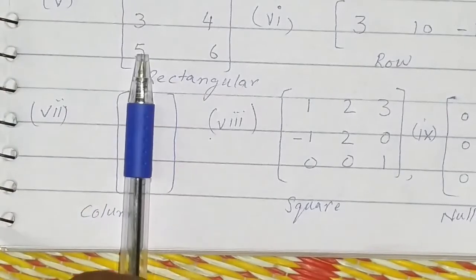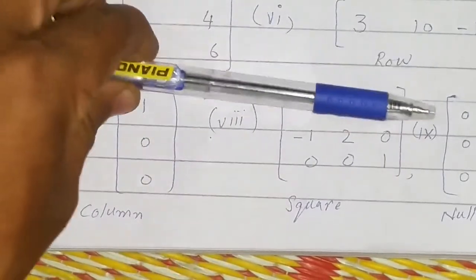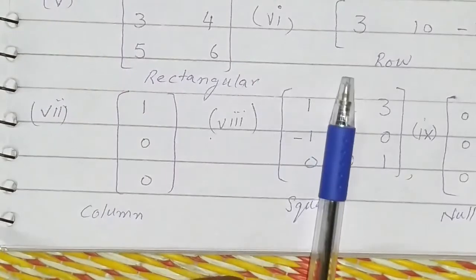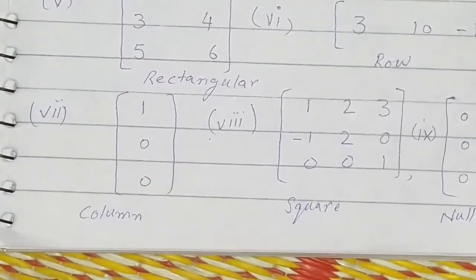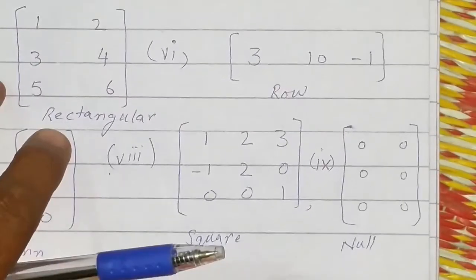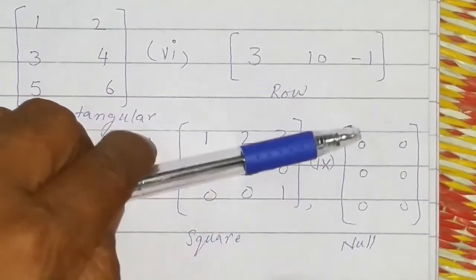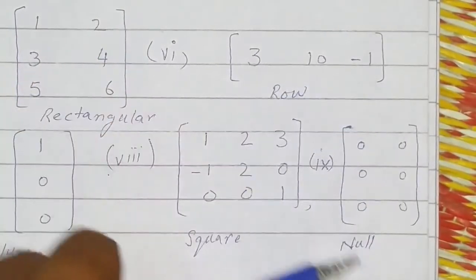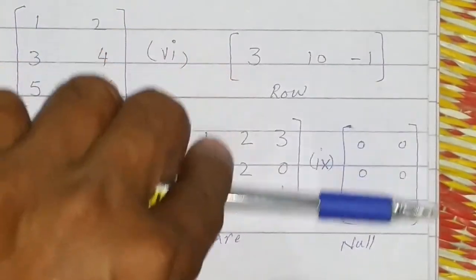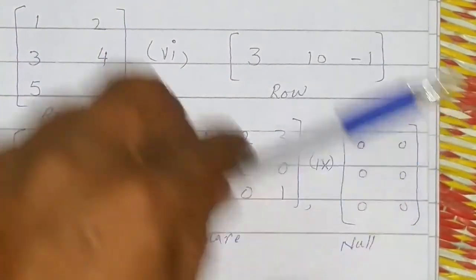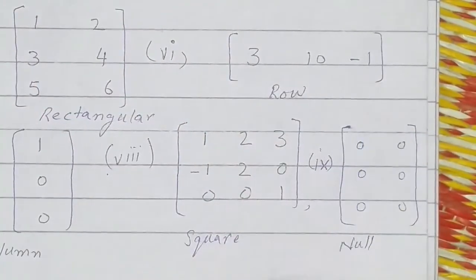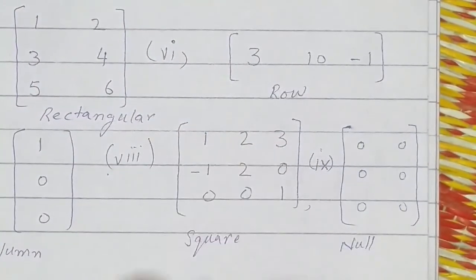Here there are three rows and two columns, so it is again a rectangular matrix. This matrix has only one row, so it is a row matrix. This one has only one column, so it is a column matrix. This has three rows and three columns, so it is a square matrix. And this is a null matrix because all entries are zero — a null matrix of order three by two, three rows and two columns.